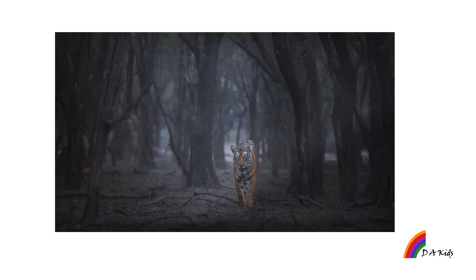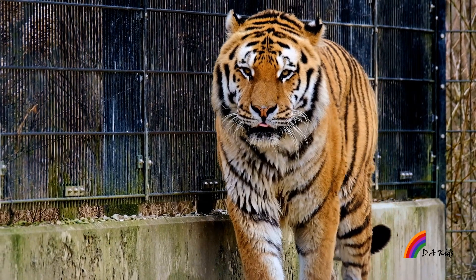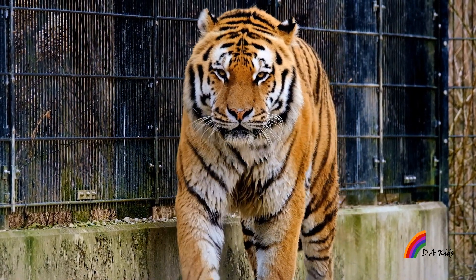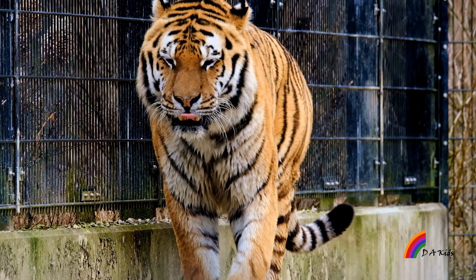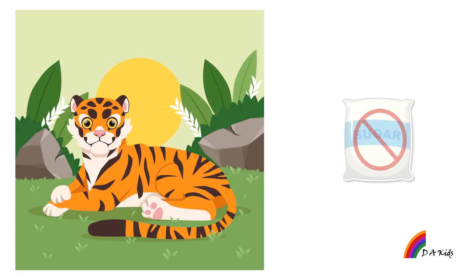Tigers have night vision. Their eyes have a special structure which lets them see 6 times better than a normal human. Tigers can eat up to 35 kilograms of meat in one night, but more often they eat about 6 kilograms during one meal. Only 1 out of every 10 hunts is successful for a tiger. A tiger's taste buds cannot recognize sweetness.